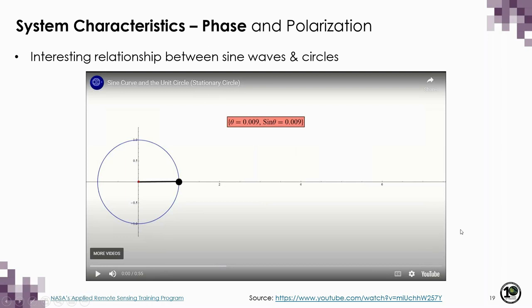Now that we know what vectors are, we can talk about phase, which is really important in SAR polarimetry. There is an interesting relationship between sine waves and circles. A vector rotating anti-clockwise about a fixed point has a constant length, but the distance between the head of this vector and the horizontal axis changes through time. If we map these changes in distance through space, a sine wave is formed as that vector makes a full 360-degree rotation.